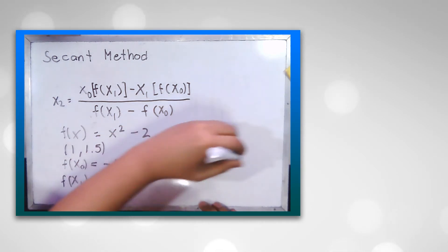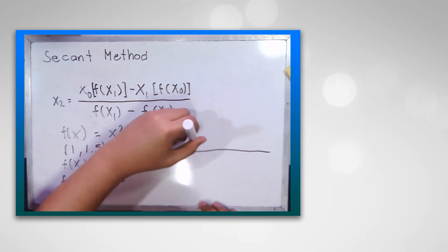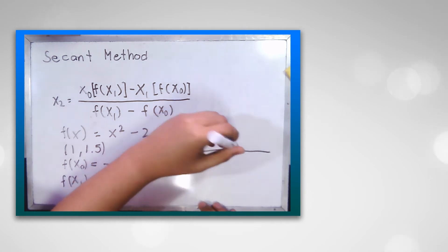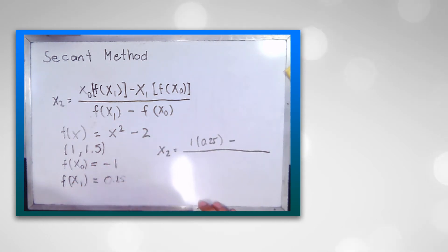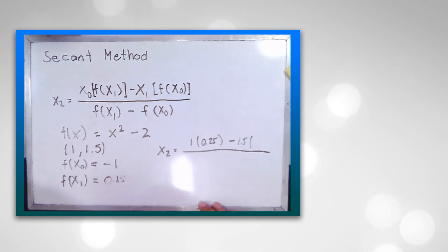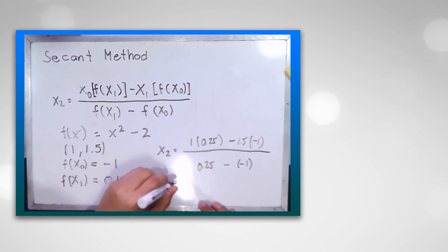x₂ equals x₀ which is 1, times f(x₁), 0.25, minus x₁, which is 1.5, times -1, then 0.25, minus -1. If we compute for this value we will get the value 1.4. So we will write that right there on our table.